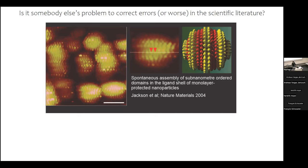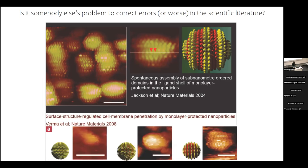So what did I do in 2004? That was two years after my PhD. I recognized this problem. I was interested more generally in the organization of ligands — I was working with peptides at the time, but I was quite interested in the idea that ligands at the surface of particles could be organizing, maybe forming patches. But I was a postdoc and I had other priorities, so basically I didn't do anything.